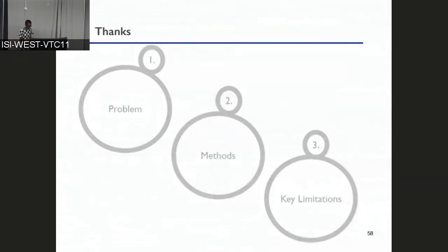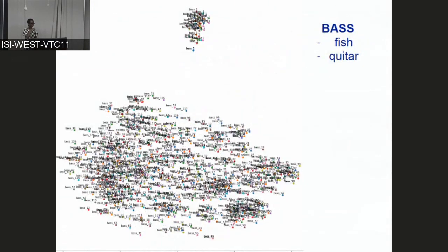Q: For the multi-sense part — are you learning it simultaneously with word embeddings, or by clustering? A: We are using a language model approach. We are training the language model and then running a pipeline to get to the word senses — it's all in one, not done offline. So it is jointly trained.